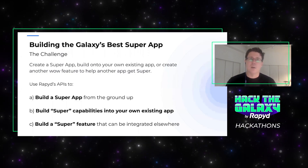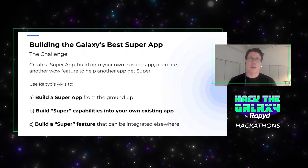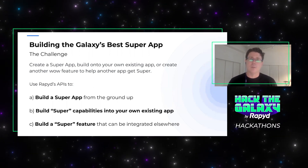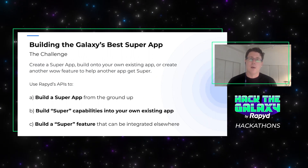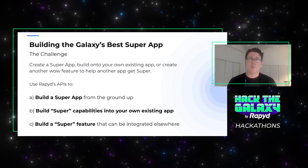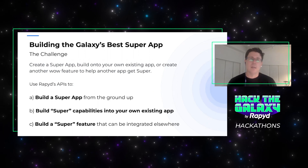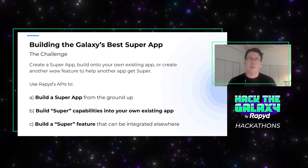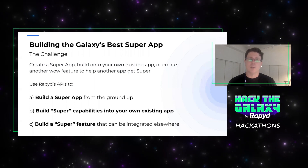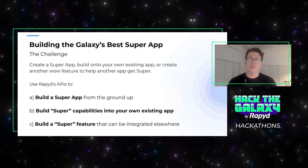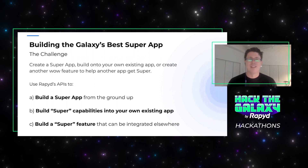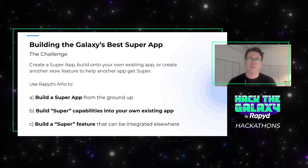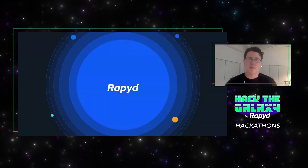So that's the challenge: can you build the Galaxy's best super app — whether it's a standalone super app, amazing capabilities built into your existing app, or a smaller feature that will help drive super app growth for someone else? That's what we're looking for and judging on. We're hoping you'll be the champion and build the Galaxy's next great super app. Thanks for your time and effort over the next few weeks. We're looking forward to seeing the results — see you in space.